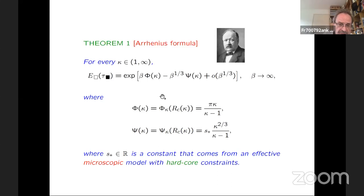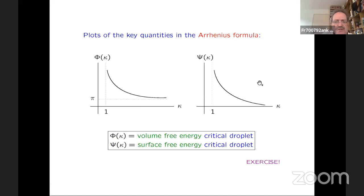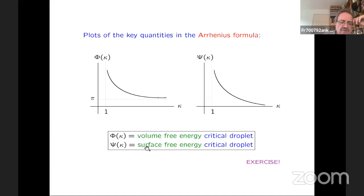You can plot these functions as a function of κ. As κ gets very large, you become more supersaturated, so the time gets shorter because you are driven through the critical droplet more quickly. The main message is: there's a volume term and a surface term. The volume term is simple and the surface term is very deep and interesting, leading to many interesting things in the background.